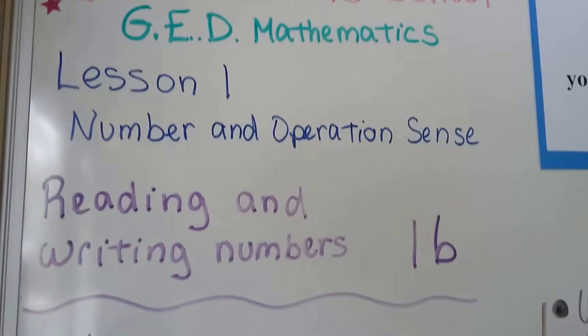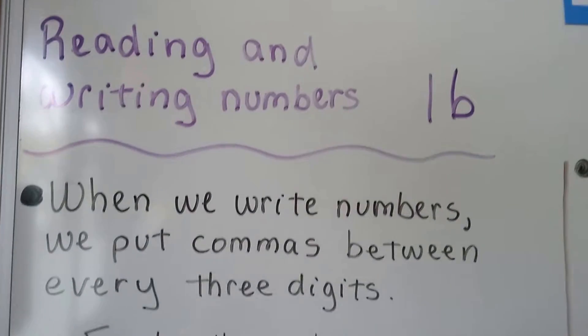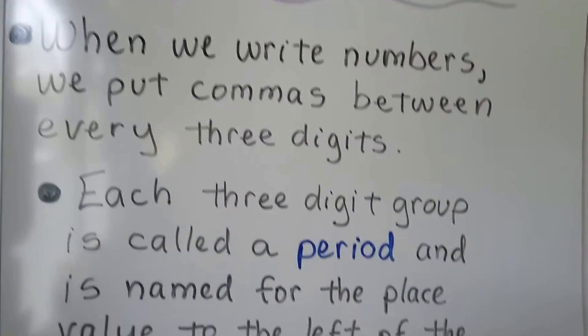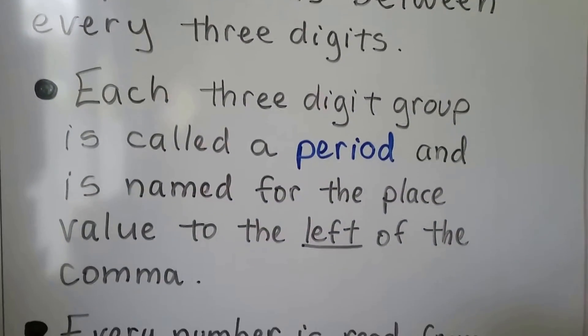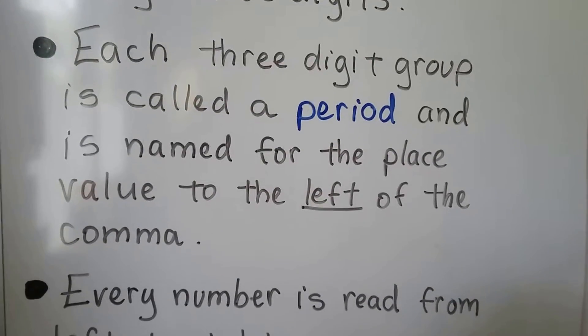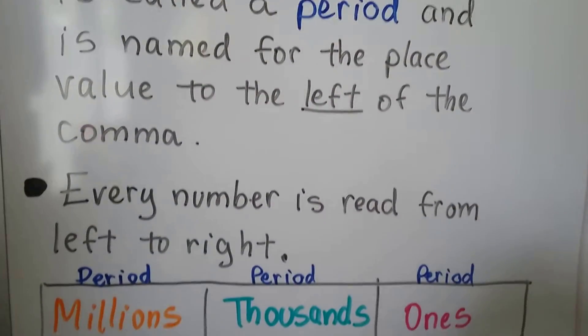Lesson 1b, Reading and Writing Numbers. When we write numbers, we put commas between every three digits. And each three-digit group is called a period and is named for the place value to the left of the comma.